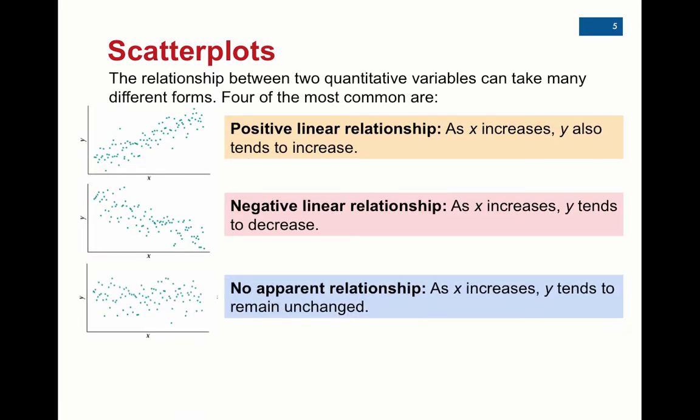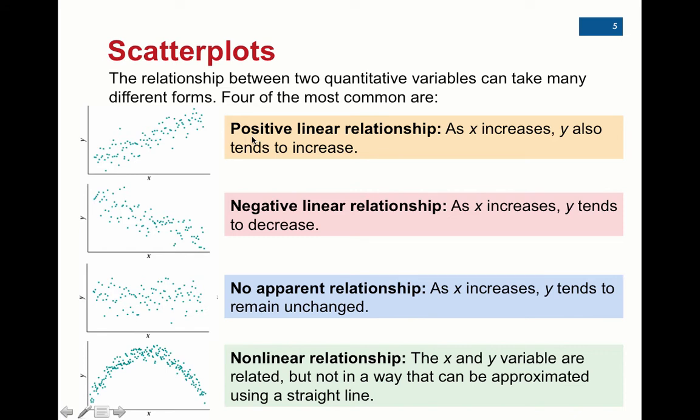Scatterplots don't all look like the previous one. We can have four examples. First, positive linear relationship: as the x variable increases, the y value tends to increase. A negative relationship is the opposite. As the x variable increases, the y variable is going to decrease, going down and to the right, just like negative slope.